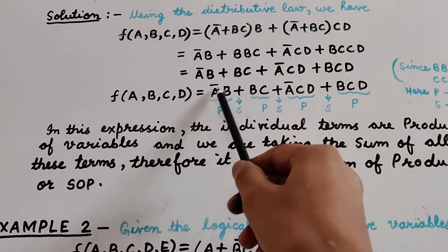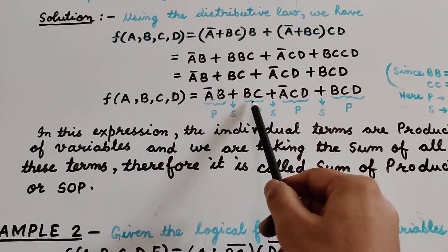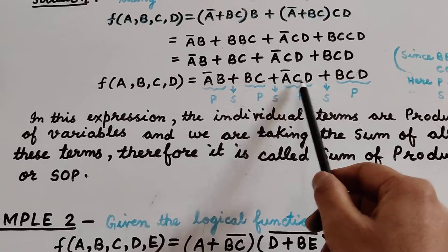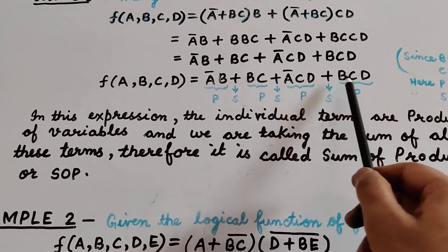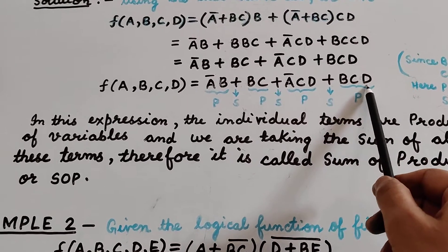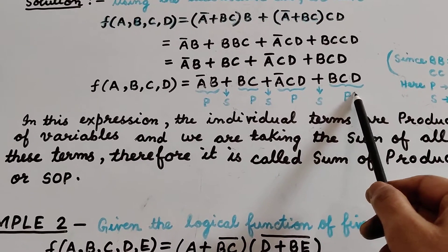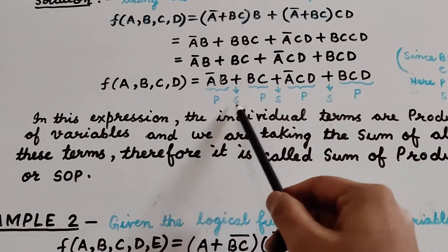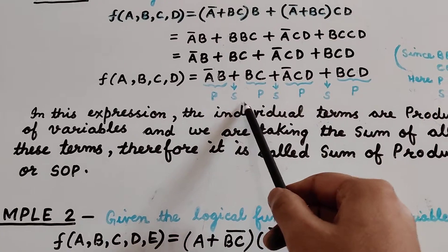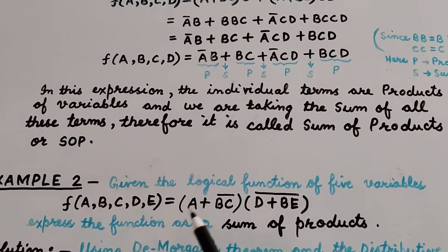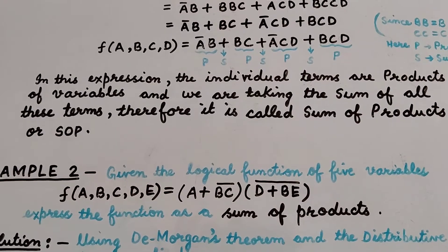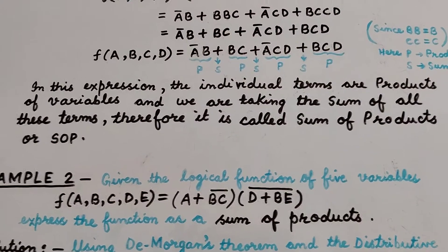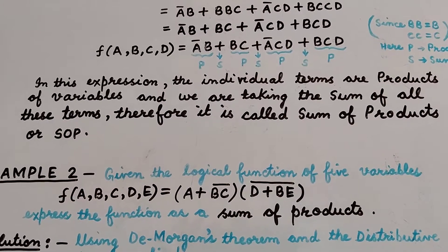The first term is the product of A complement and B. The second term is the product of B and C. The third term is the product of A complement, C, and D. The fourth term is the product of B, C, and D. We are taking the sum of all these products — the products are denoted by P and the sum by S. That is why this form is called the Sum of Products form, or SOP.